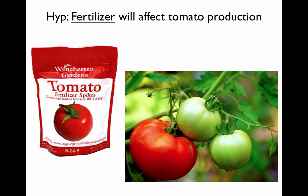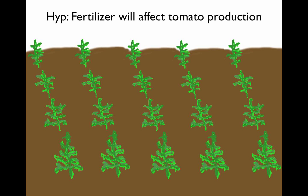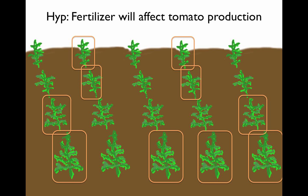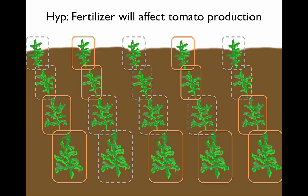The variable you're interested in testing is fertilizer, so this is your independent variable and the one you will manipulate in your treatments. In your experiment, you start by preparing the soil in your garden, and then you plant 20 tomato plants spaced pretty far apart. You randomly assign 10 of the plants to be fertilized, and the other 10 plants receive no fertilizer. The plants that receive no fertilizer are our control group — similar in every way to the other tomato plants except they don't get fertilizer. They're getting the same amount of sunlight and water, and growing in the same soil. Therefore, if we see a difference in tomato production between treatments, we know it must be due to fertilizer and not some other factor.